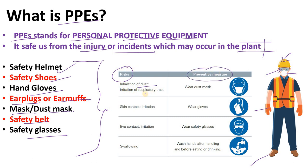Inhalation of dust causes irritation in the respiratory tract. Suppose if you are working at a place where there is dust — for example at a prilling tower in urea manufacturing where there is too much dust coming out — you must wear a mask. Where dust formation is high, a mask will help you prevent inhaling the dust.